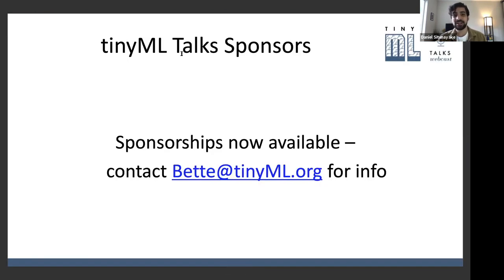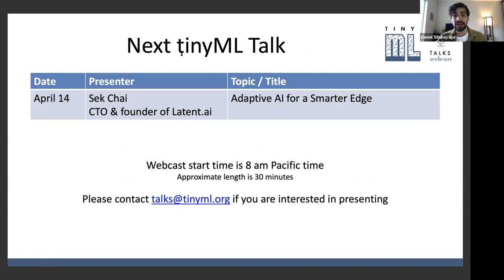We are looking for sponsors for this series of talks. There's going to be a talk once every two weeks. If you're interested and you'd like your logo up here, you can reach Betty at betty@tinyml.org for more info. Our next talk is going to be on April 14th from Sek Chai, who is the CTO and founder of latent.ai. The topic is adaptive AI for a smarter edge. All talks start at 8am Pacific and go for about 30 minutes. If you're interested in presenting, drop us an email at talks@tinyml.org. The talks will also be made available online the day after.